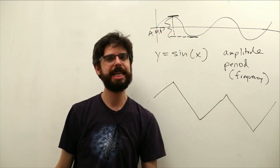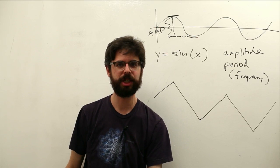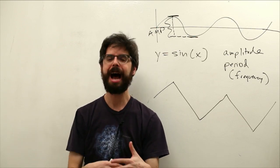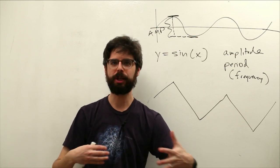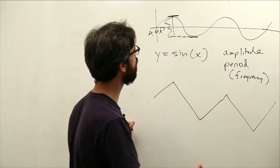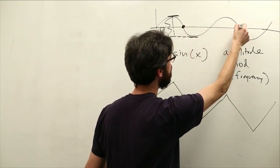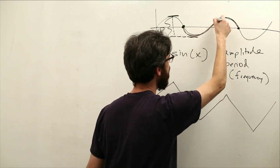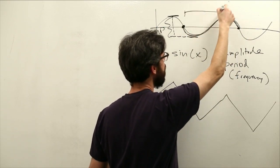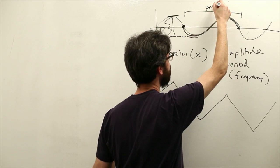Period is the amount of time it takes for the wave to repeat itself. How long is one cycle that repeats? And we can see here how long is that? If we look from here to here, this section is an entire cycle of this wave. And so this length is the period.